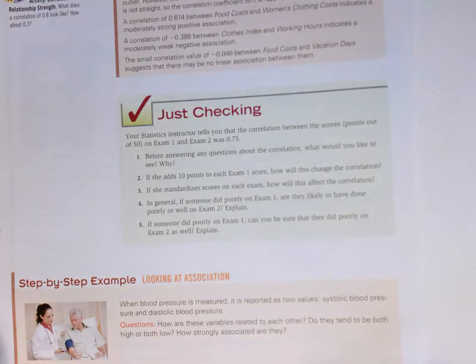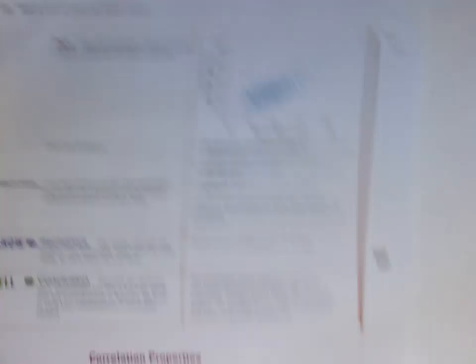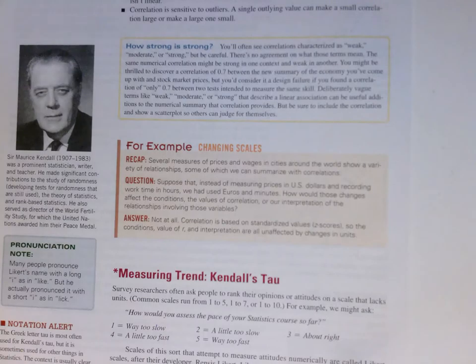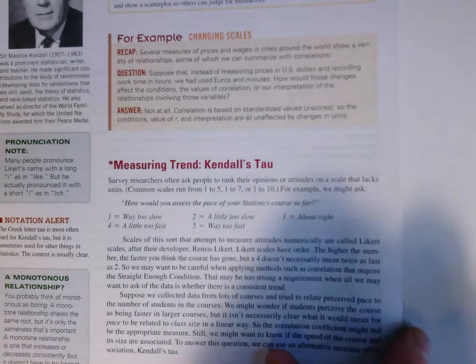Just checking, as always, please work through the just checking as you proceed. There's a nice example here with the think, plan, show, tell. Aspects of the correlation properties that will be important to be thinking about. There's a nice extension here with Kendall's tau. We won't be using Kendall's tau in the course so that section you can actually leave off.